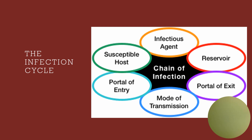We have to have all six pieces involved or infection is not going to happen. We start off with that infectious agent, which can be a bacteria, virus, or fungi. We have a reservoir, which is where that organism is actually going to grow and multiply. Then we have to have a way for that infectious agent to get out of the reservoir — a portal of exit — a place of escape for the organism.